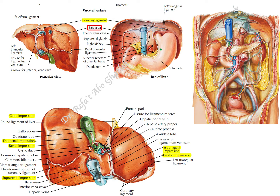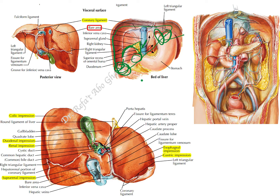To summarize: on the visceral surface of the liver, there is a gastric impression, a colic impression for the right colic flexure and transverse colon, a renal impression for the right kidney, a suprarenal impression close to the inferior vena cava, and a duodenal impression for the superior part of the duodenum. That's it for this video — hope you found value in it, thank you.